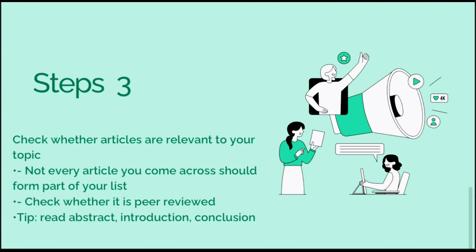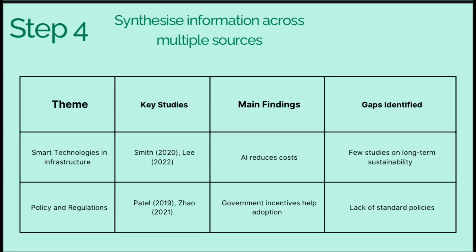Step three is to determine whether the research articles you've downloaded are relevant to your topic, because not every article will be relevant. I recommend reading the abstract, introduction, and conclusion — there's no use going through a whole 50-page document if what you need is not there. Scan through the document, and if it's relevant keep it; if it's not, discard it.